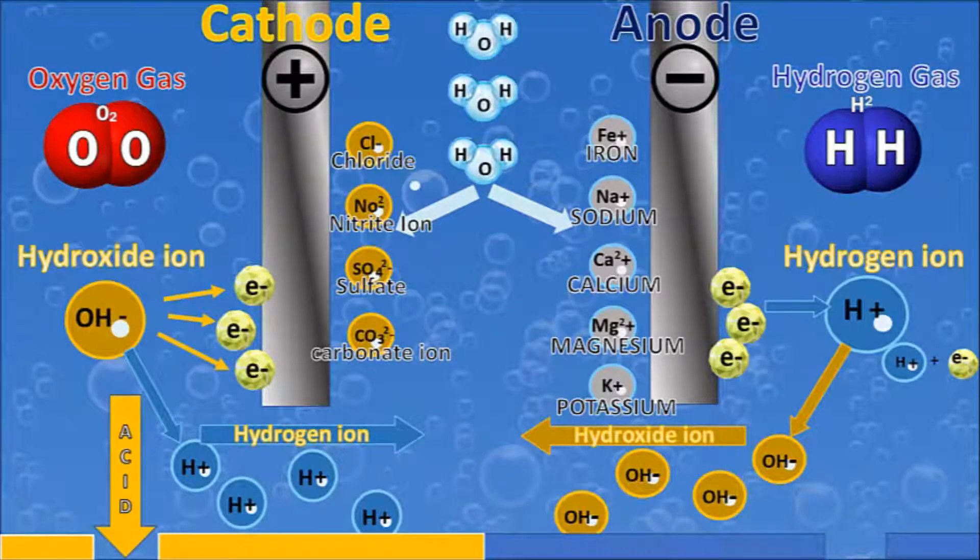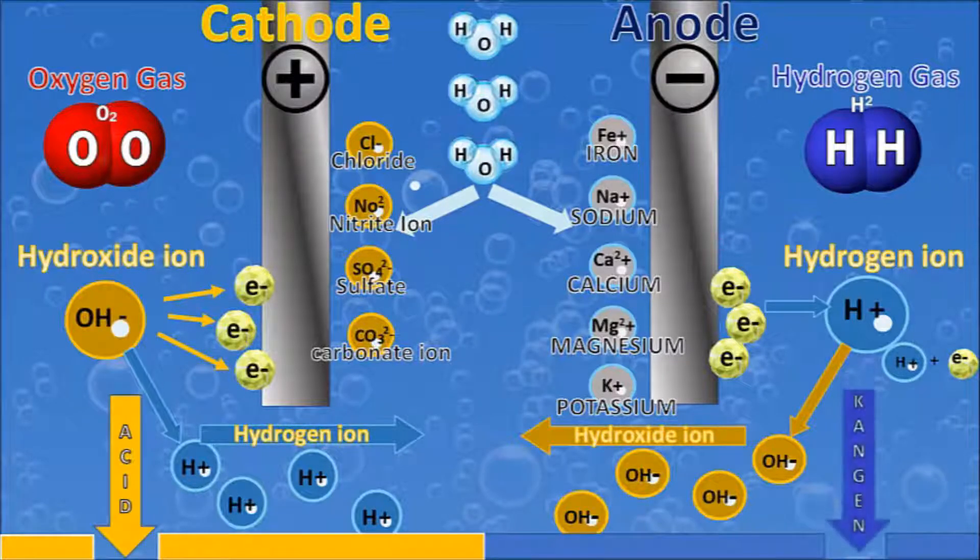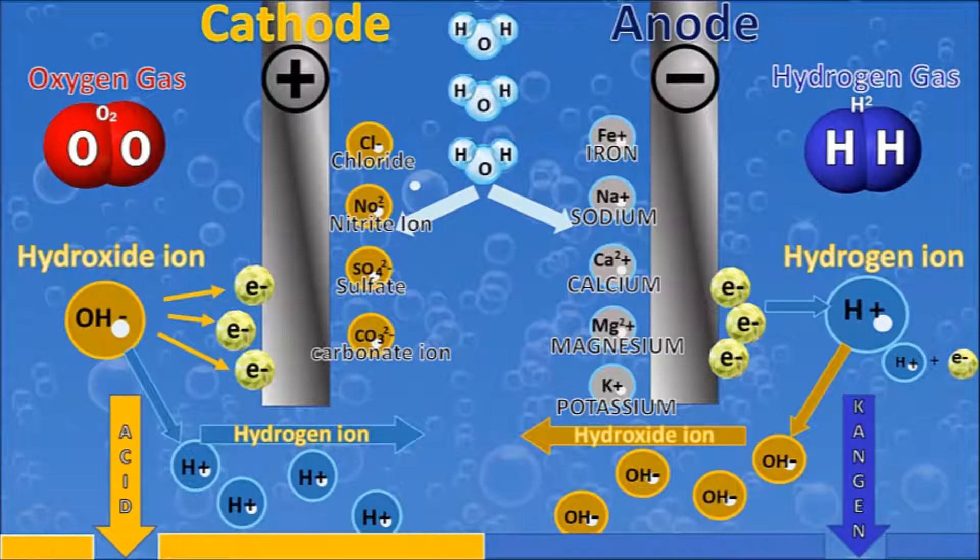Down this pipe, the acidic water would then go down. This is the water that we use for other things like cleaning and disinfecting. And on the other side is where the Kangen, the beautiful Kangen water, gets created.